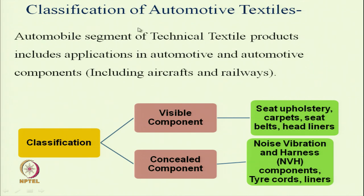In another way, we can classify automotive textiles based on whether it is a visible or concealed component. Visible components are those we can see easily, like seat upholstery, carpets, seat belts, and headliners. Concealed components are noise, vibration, and harness components, tire cords, and liners — these are inside the car for different purposes.